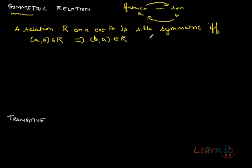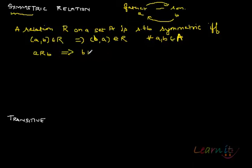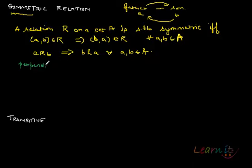So ARB should imply BRA for all A and B belonging to the set A. For example, we can take identity and universal relations — these are two relations which will always be symmetric. In identity, A is always related to A itself, and in the universal relation by definition, symmetry also holds.